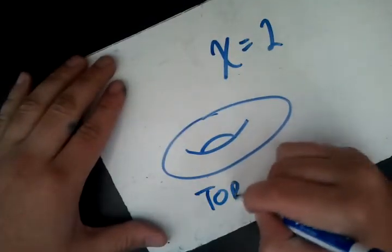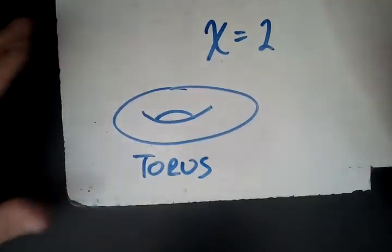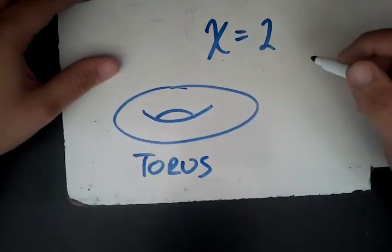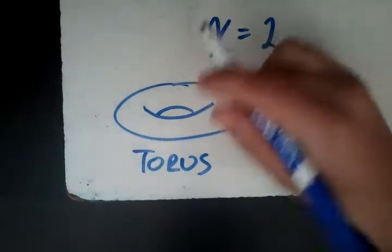This is called a torus. It's basically a donut, if you will. So a torus has a big hole in the middle right here.